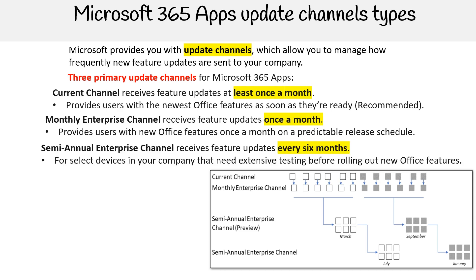And then we have Semi-Annual Enterprise Channel, which receives feature updates every six months. This update can include feature, security, and non-security updates. This is only for select devices in your company that need extensive testing before rolling out new Office features.